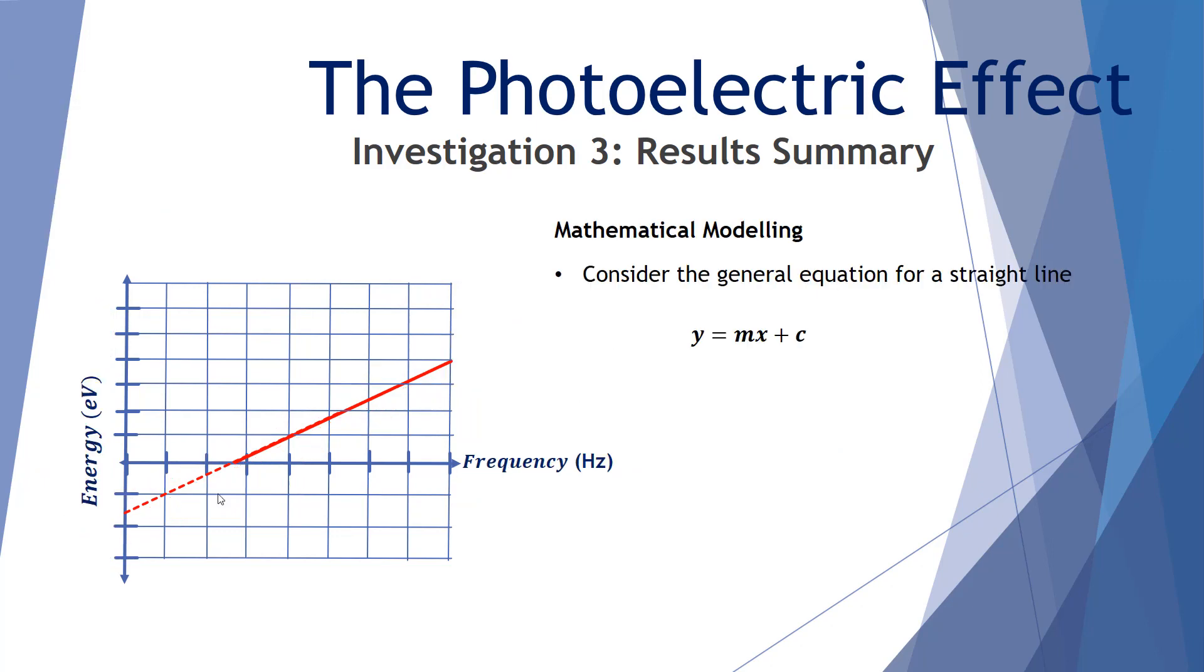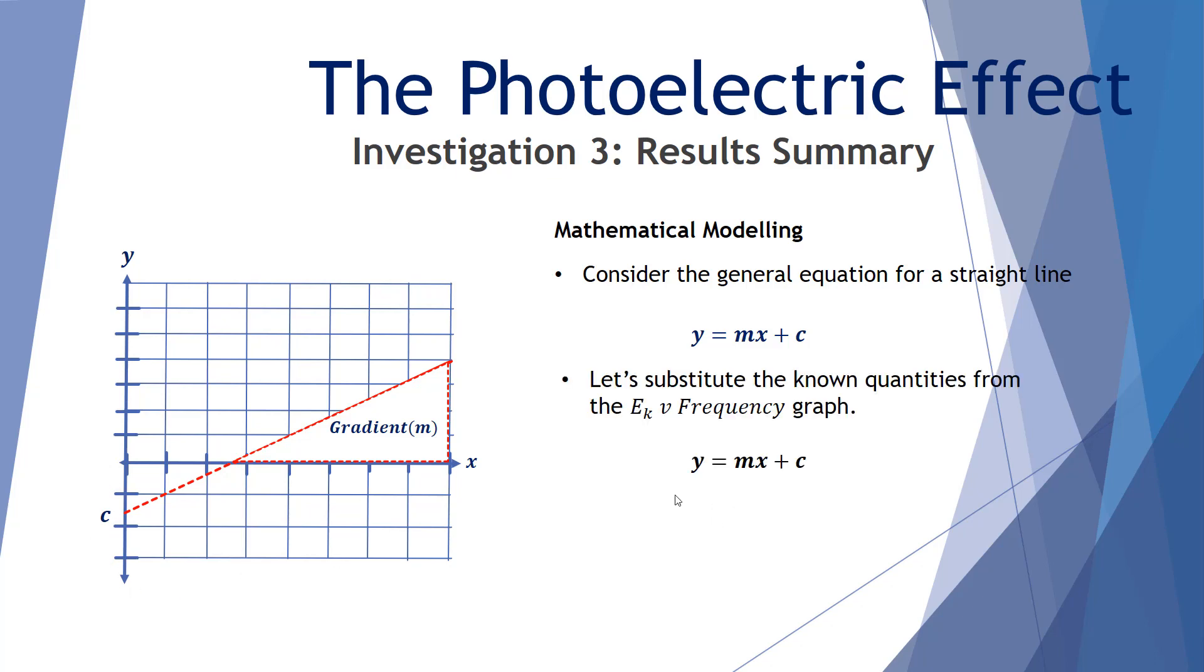Let's now look at some mathematical modeling. Every straight line has the relationship y equals mx plus c. Let's expand upon this. So y represents our vertical axis. m is our gradient. x is our horizontal axis. And c is our intercept on the y-axis. So y equals mx plus c. Let's substitute the known quantities from the Ek versus frequency graph. Our kinetic energy frequency graph into this equation. So y is replaced by energy, either in electron volts or joules, but we'll choose electron volts for this particular example. m, the gradient, is represented by Planck's constant h.